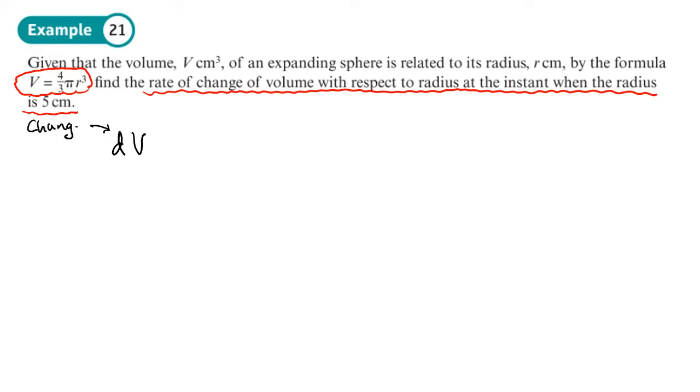So you could think of the letter D as meaning change, and it does mean like a small change. The change in volume with respect to, so you could think of this as meaning with respect to, or even over. The change in volume with respect to the radius, in other words, this DR. So you could think of this, so this means change again. That statement actually means the change in volume over the change in radius. How does the volume change as the radius changes?